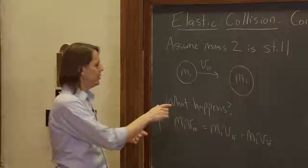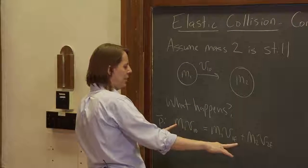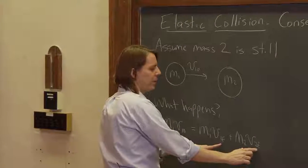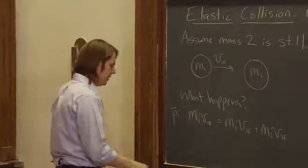And if you're doing a real problem, you would probably be given both masses and this as unknowns. Both masses and V1 naught being said, there's two unknowns, V1f and V2f. So you'd want to find those. We can find them though, because we have the kinetic energy also conserved.